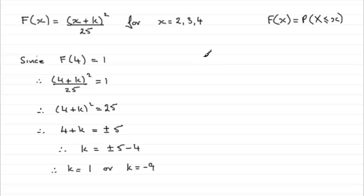Now we're told that k is a positive integer. So we could say that since k is greater than 0, it therefore means that k must be equal to 1.